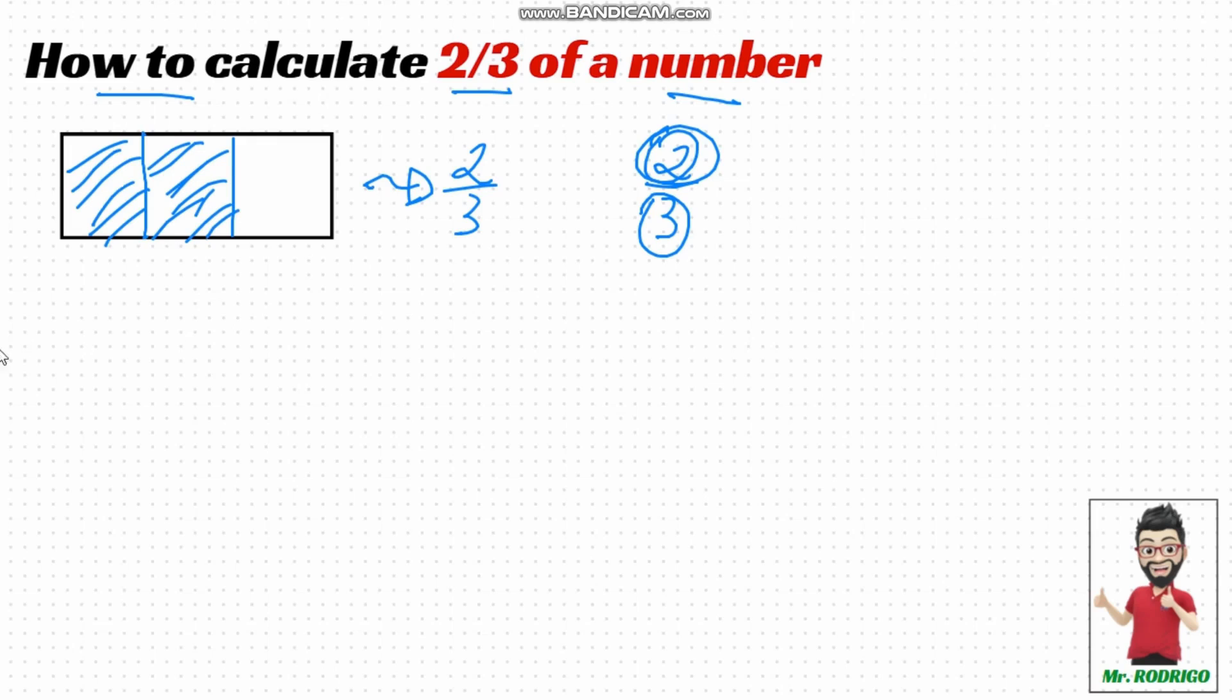Now let's do it with a number. How do I calculate two-thirds of twenty-four? The first step is to take twenty-four and divide it into three equal parts. Twenty-four divided by three is eight. And then, don't I want two of those parts, two of those divisions I made? So I'm going to multiply this result here by two. I want two of those parts. Eight times two is sixteen.